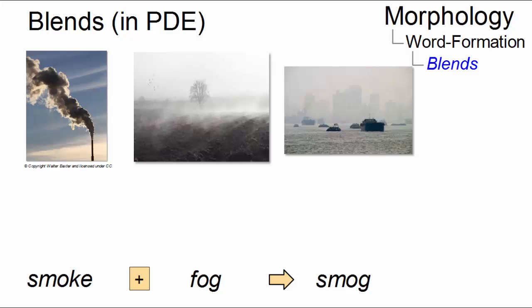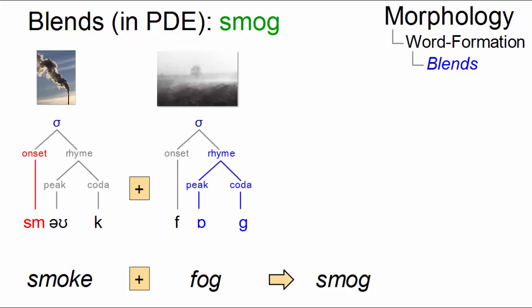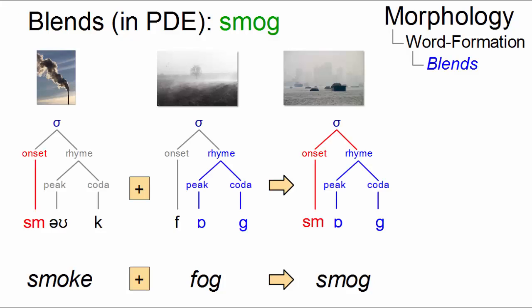In smog, two monosyllabic words are recombined, and we can clearly see that the result is a combination of the onset of the first syllable and the rhyme of the second one.